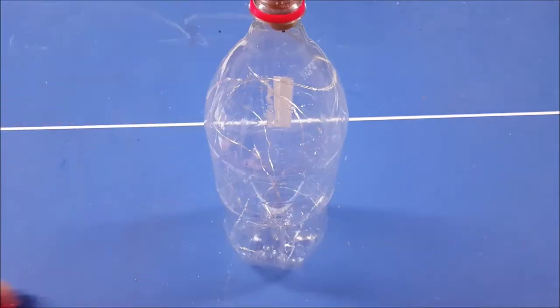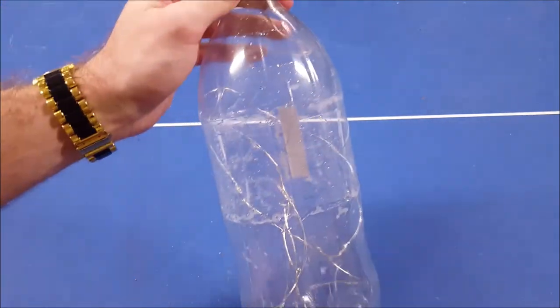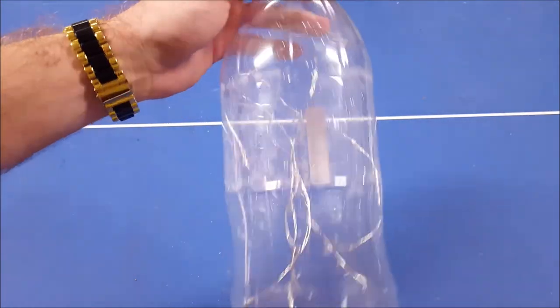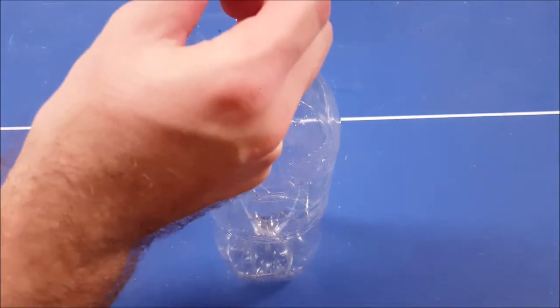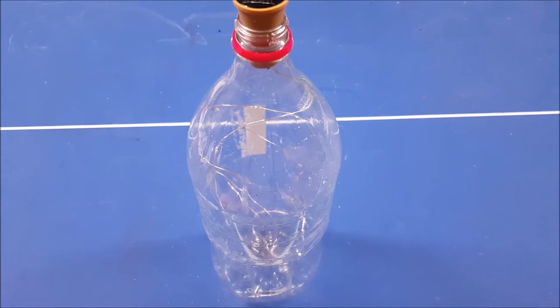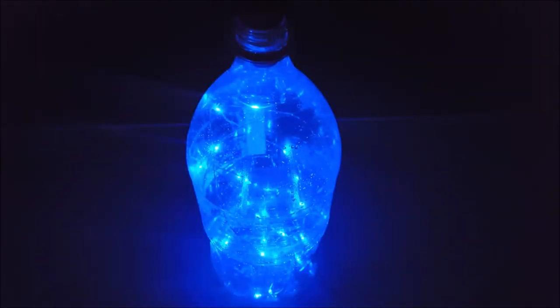Alright, so there we go guys, the label's off. Now you have a better idea of what it looks like on the inside. It looks like a tangled mess, but I think that's going to give us a nice look. So let's go ahead and turn this switch on. The switch is on. Let's go ahead and turn off the lights and see what it looks like.